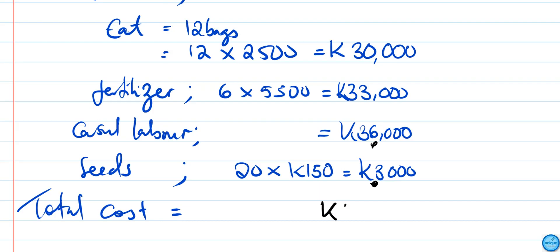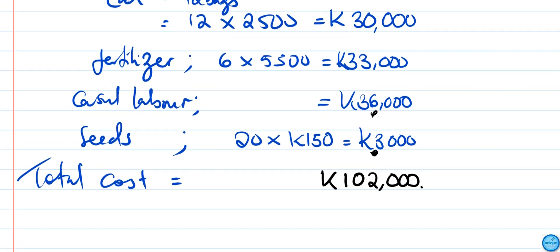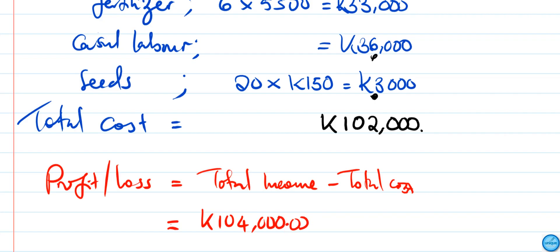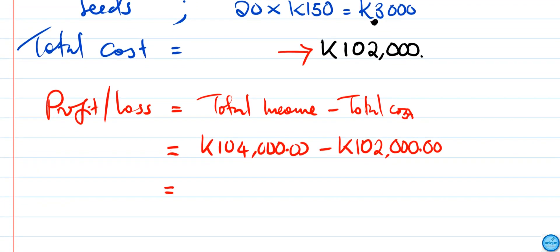We need to find the difference between total cost and total income. Profit or loss is equal to total income minus total cost. The total income here is K104,000, then you should subtract the total cost which is K102,000. The difference between these two is the profit, that's K2,000.